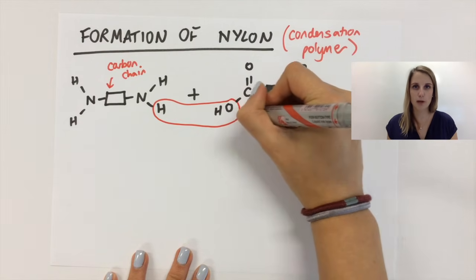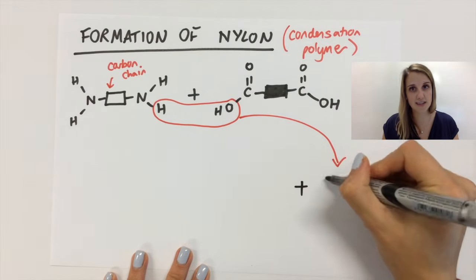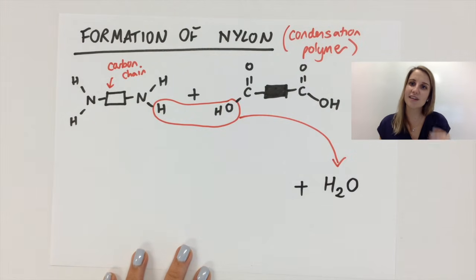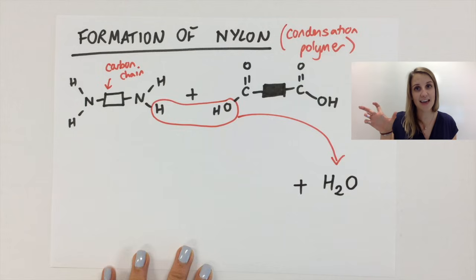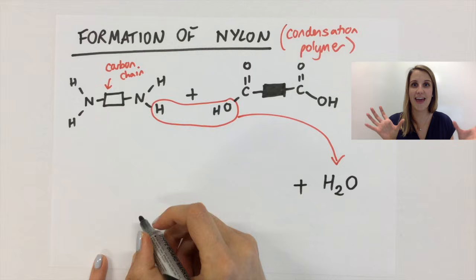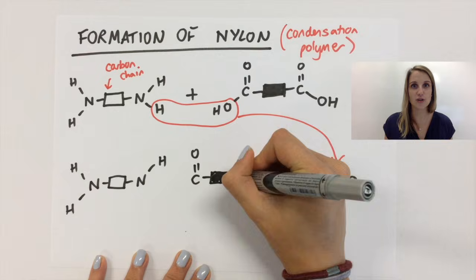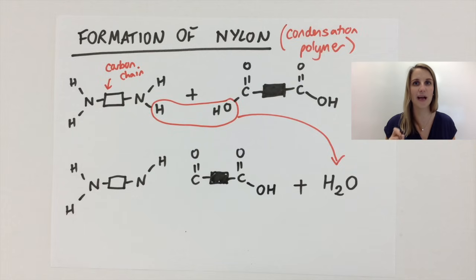I want to break the minimum number of bonds, which means I'm going to break the OH from the molecule on the right — because I don't want to break that double bond, that's a lot of bonds — and I'm also going to take the H from the nitrogen on the left. Those together make water. Now if I draw out everything that I have, the nitrogen is supposed to have three bonds and the carbon is supposed to have four bonds, but currently both of those things are lacking a bond, which is where the polymerization happens.